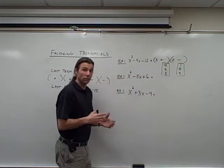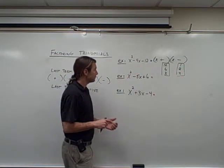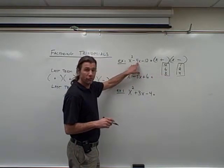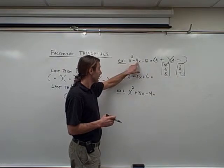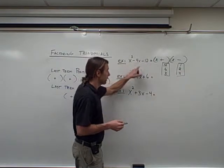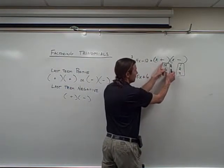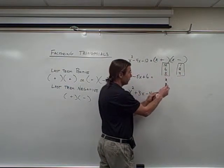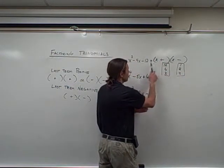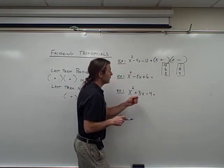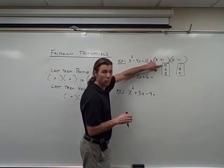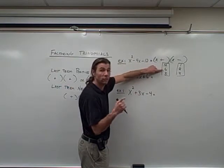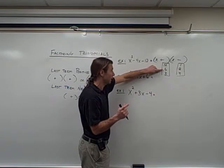One of these factor pairs is going to work. Since one sign is positive and one is negative, some cancellation is going to take place, so I'm actually looking for factors where the difference is 4 — to give me negative 4 for my middle term. The difference between 12 and 1 is 11, that doesn't work. The difference between 2 and 6 is 4, so that's going to be my factor pair.